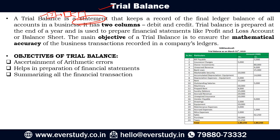In the trial balance, two specific columns are created — debit and credit. Why do we prepare a trial balance? The main importance is that at the end of the financial year, we have to prepare financial statements — we have to prepare the P&L account and the balance sheet. The summarized form of the trial balance is very helpful in preparing those statements. Its main objective is to ascertain mathematical accuracy, which can be done by preparing the trial balance.